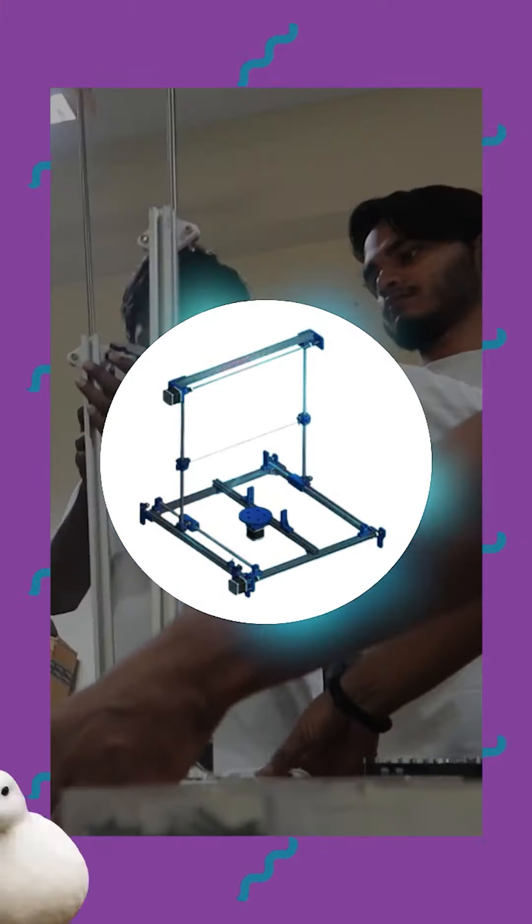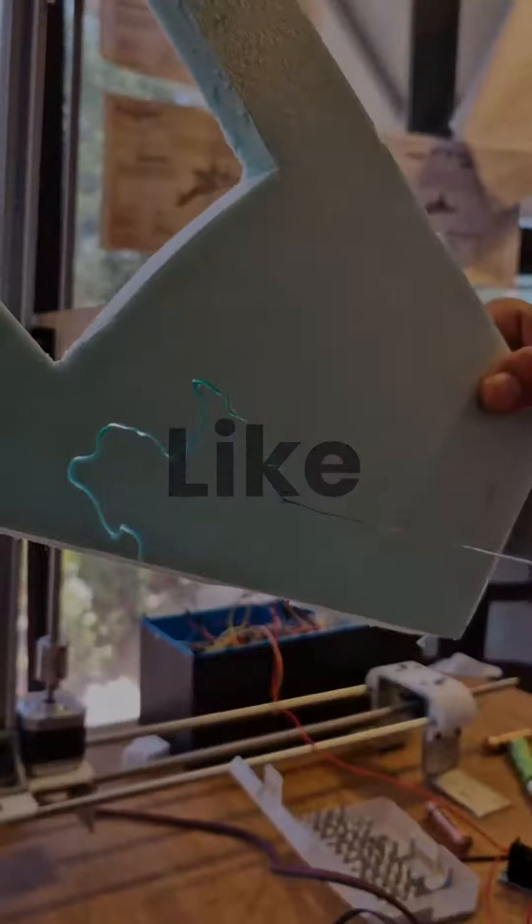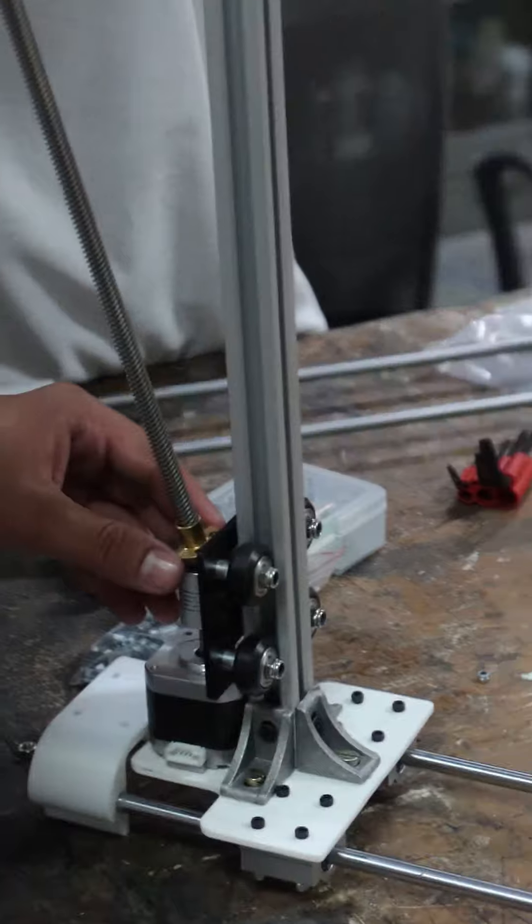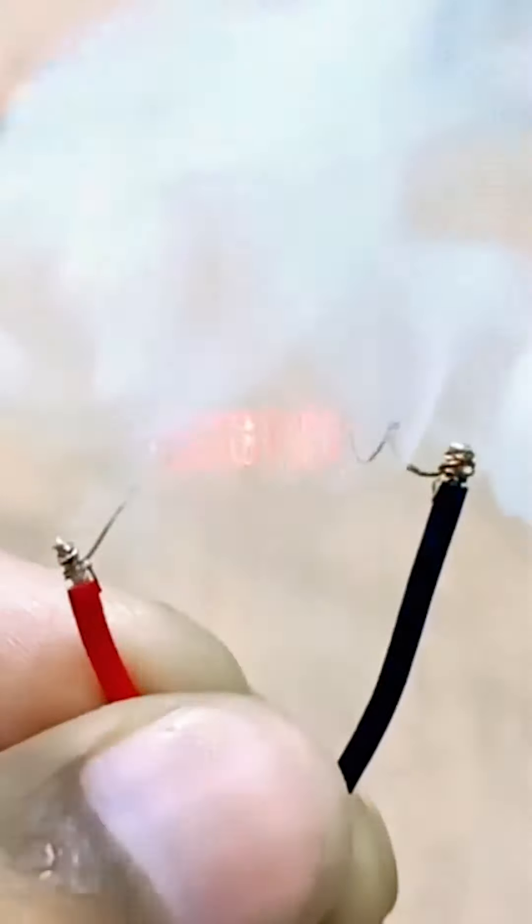The specialty of the auto foam cutter is that we can import any design and it will cut through SPF foam like butter. The design is kind of similar to a 3D printer with base, long channels for up and down sideways movement and pulley system for nichrome wire.